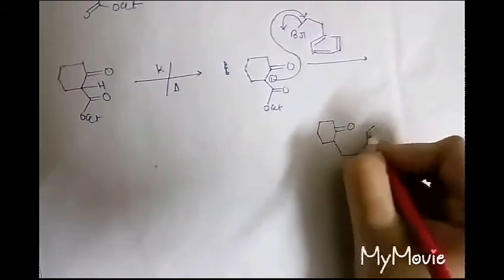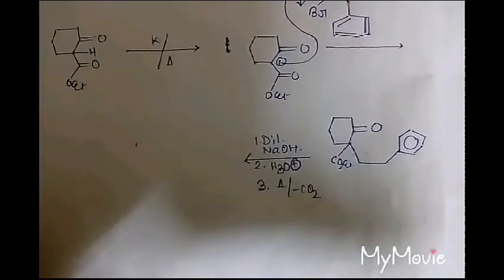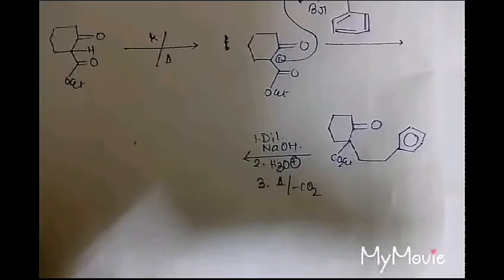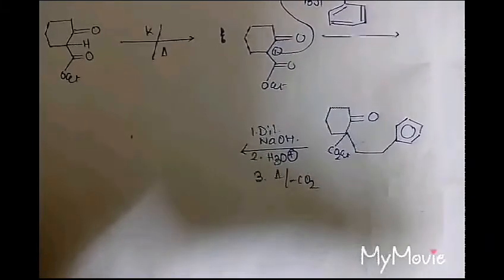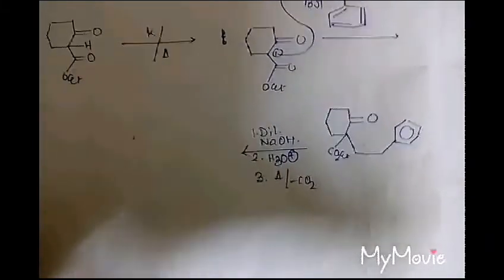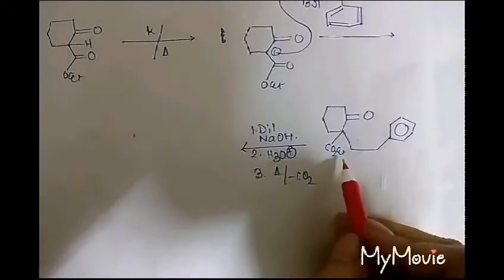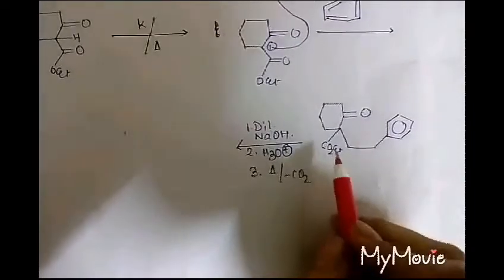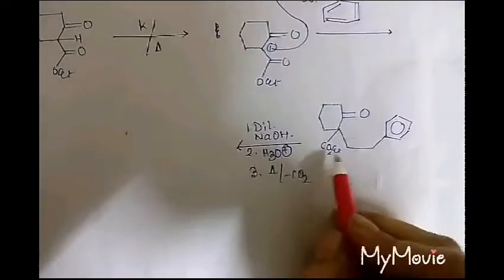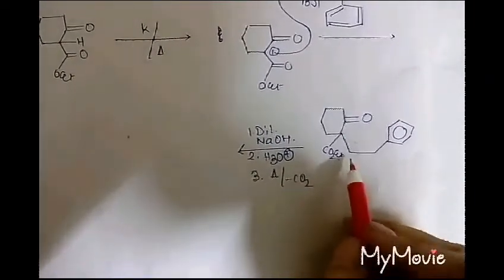To this compound, dilute NaOH, H2O+, and heat are added. By adding dilute NaOH, the CO2 group will become CO2- Na+. By adding heat, CO2 will be liberated.